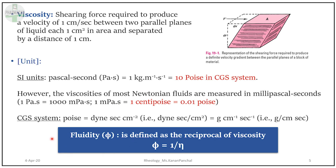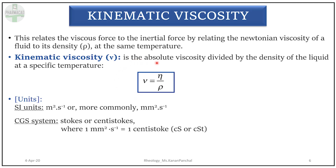Fluidity is just the opposite of viscosity — it is the ease with which a fluid can flow. It is mathematically represented as the reciprocal of viscosity: phi (φ) equals 1 divided by eta (η). Kinematic viscosity is obtained by relating the absolute viscosity with the density of the liquid being studied. Mathematically, it is expressed as absolute viscosity divided by the density of the liquid at a specific temperature. The SI units of kinematic viscosity are meter squared per second, or more commonly millimeter squared per second. In the CGS system it is expressed as stokes or centistokes, and 1 millimeter squared per second equals 1 centistoke.